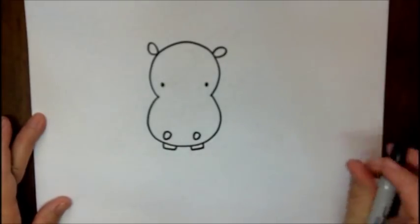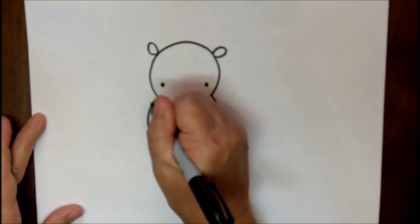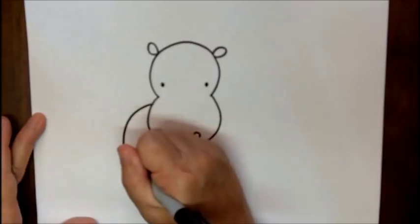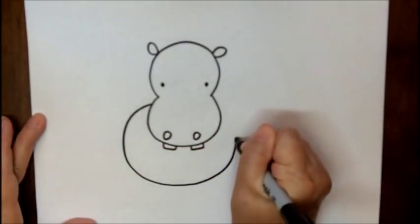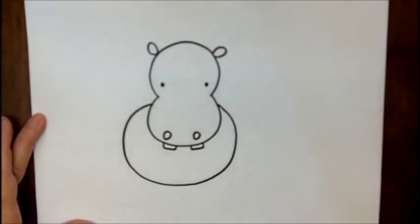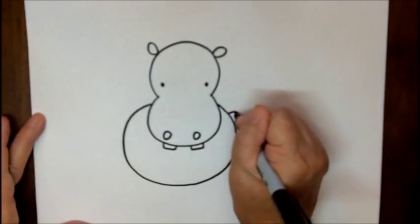For the hippo's body, we're going to start maybe at the top of the cheek, come around to the other side of his head. Put a little tail on him.